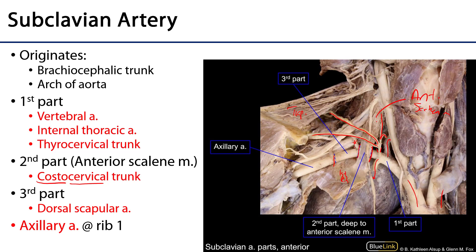The third part has one branch, and that is the dorsal scapular artery. The dorsal scapular artery serves the muscles along the medial border of the scapula with blood — in particular levator scapulae and the rhomboid muscles, major and minor. As mentioned, sometimes this can be a branch of the transverse cervical artery.